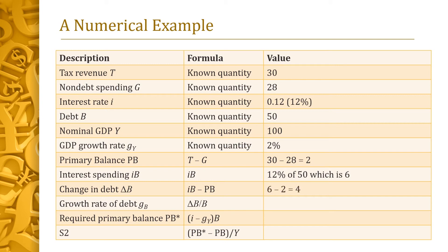We can now calculate the change in debt, delta-B. It equals 4: the interest payment of 6 minus the primary balance PB of 2. The growth rate of debt, G_B, is thus 8 percent — the change in debt of 4 divided by the debt level B of 50. Since the 8 percent growth rate of debt exceeds the 2 percent growth rate of GDP, this country's debt is unsustainable.